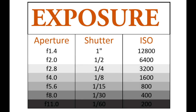So what exactly is exposure? Exposure is simply just getting the brightness of our images correct — not too bright, not too dark. And there are three settings on the camera that control the brightness of our images: the aperture, the shutter speed, and the ISO setting.